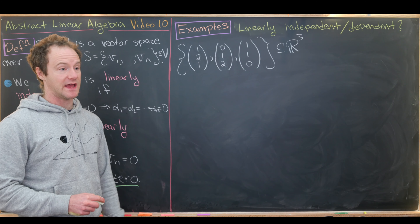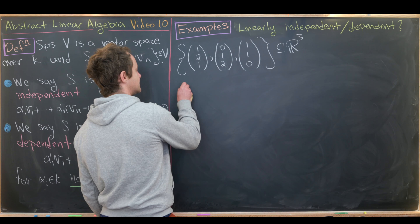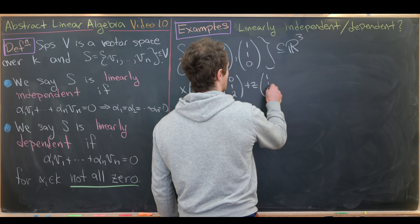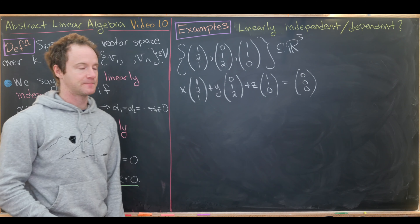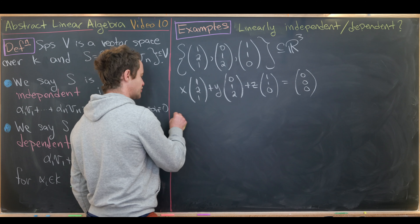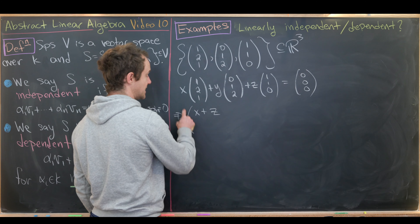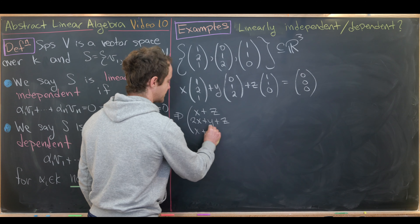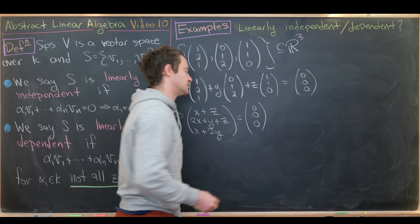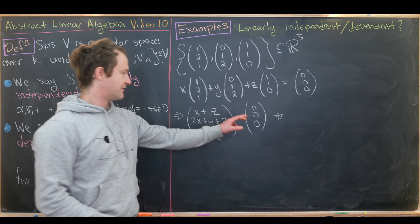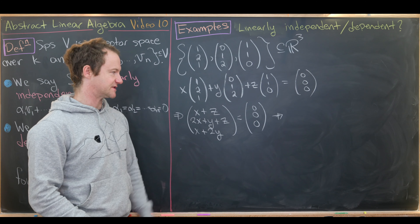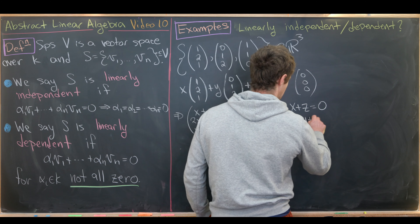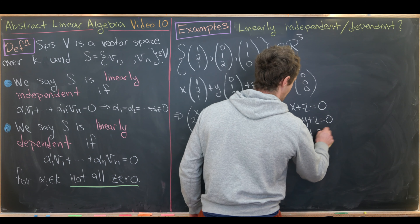Using scalar multiplication and vector addition, we get three scalar equations: x + z = 0, 2x + y + z = 0, and x + 2y = 0. From the first and third equations, z = -x and y = -x/2.